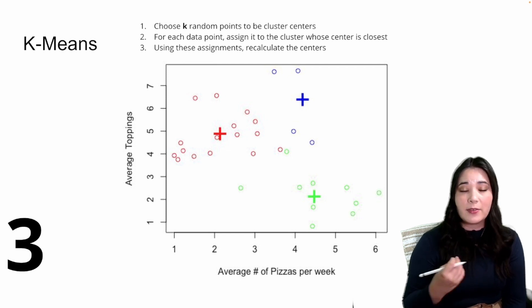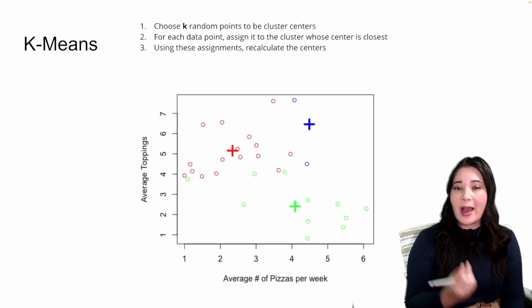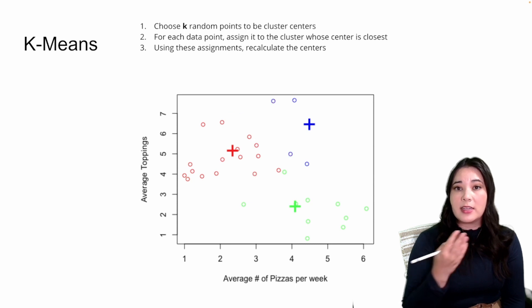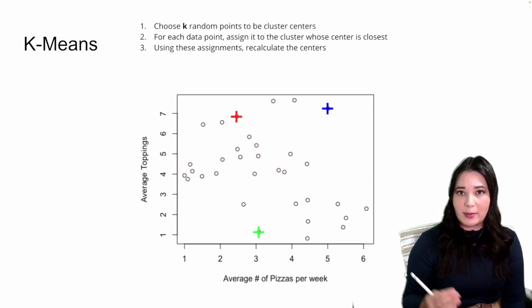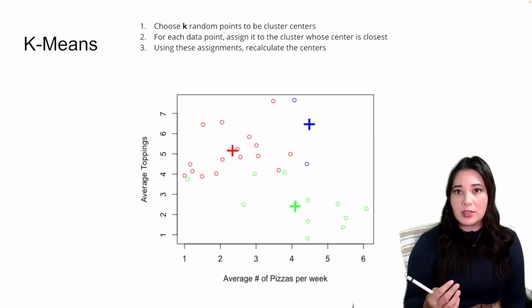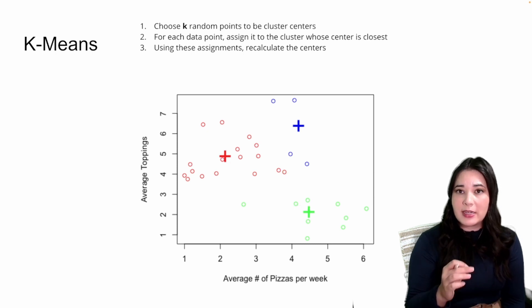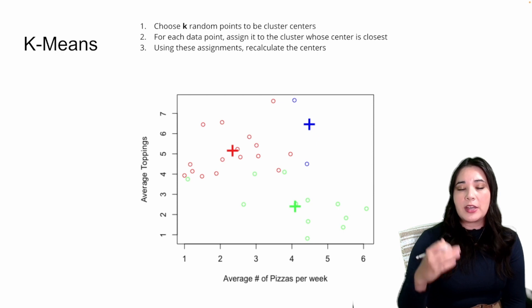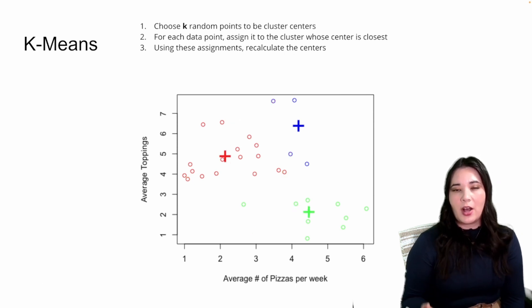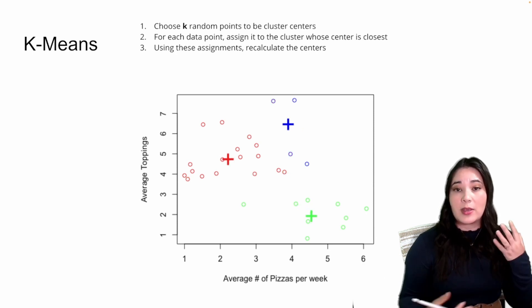We repeat steps two and three over and over until convergence. Convergence essentially means we have a stable set of clusters. We can think of this in two ways: first, stable clusters mean that data points don't switch clusters when we're iterating through steps two and three. Alternatively, convergence means the centers only change a little or not at all. These are basically two ways of looking at the same thing — clusters that are stable and not changing as we iterate.